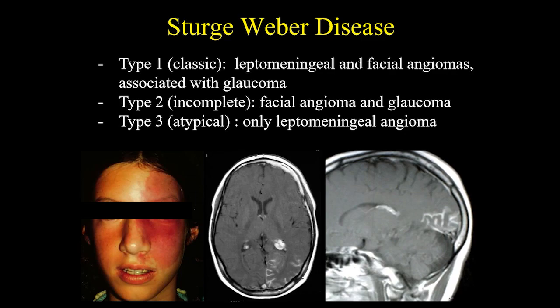Sturge-Weber disease can be classified in three different types. Type 1, the classic, has leptomeningeal and facial angiomas associated with glaucoma. Type 2, incomplete, you can have facial angioma and glaucoma. Type 3, the atypical, you see only the leptomeningeal angioma.